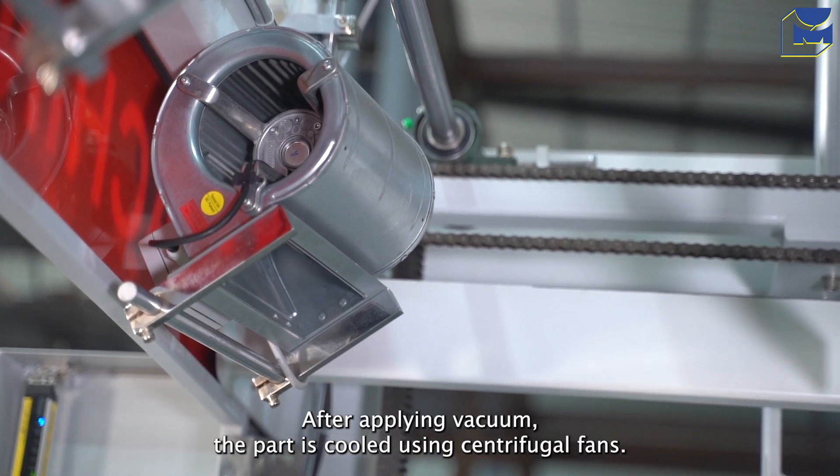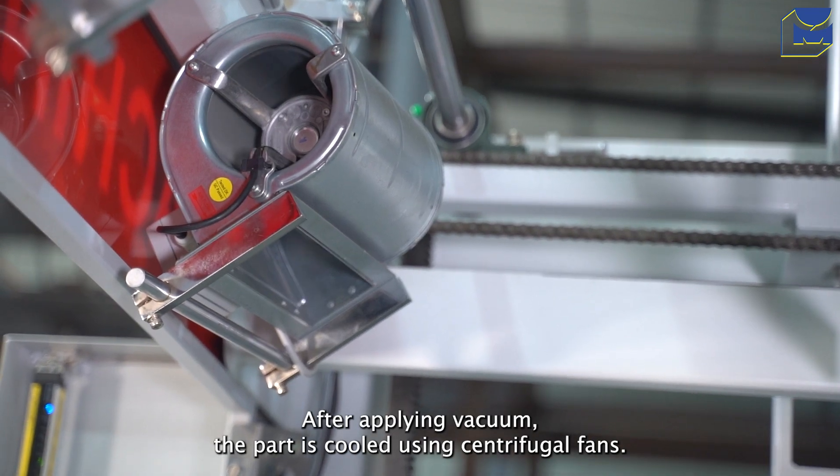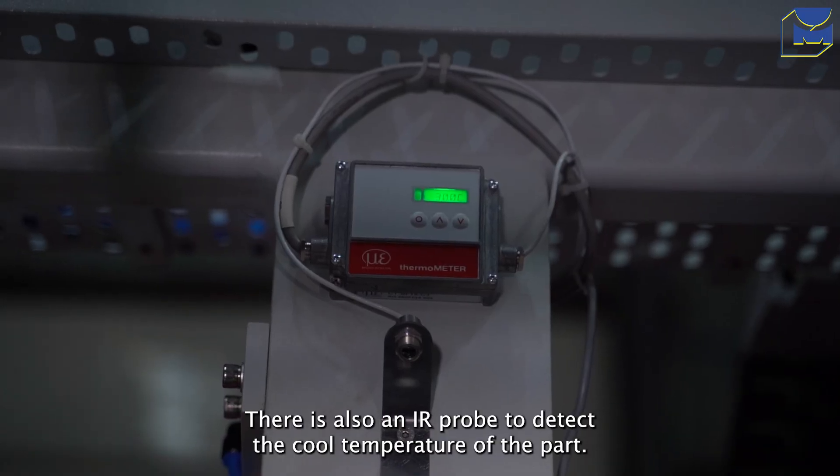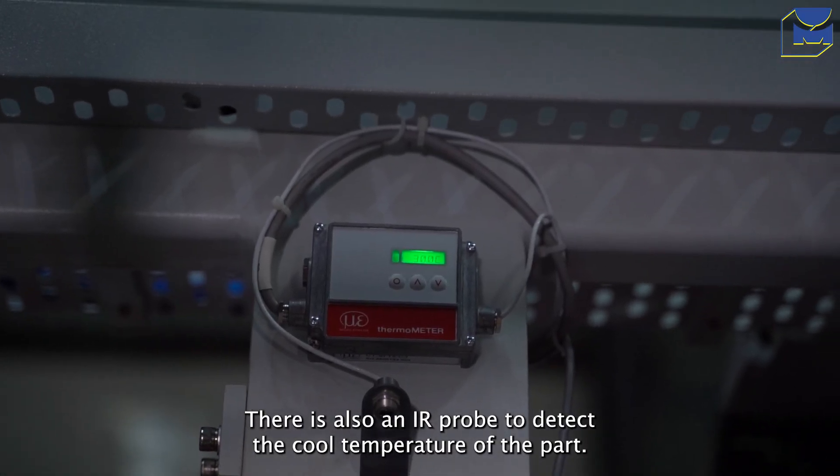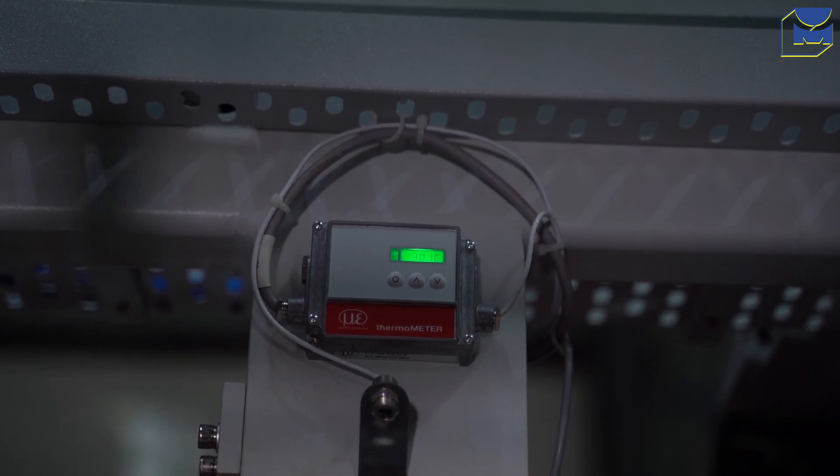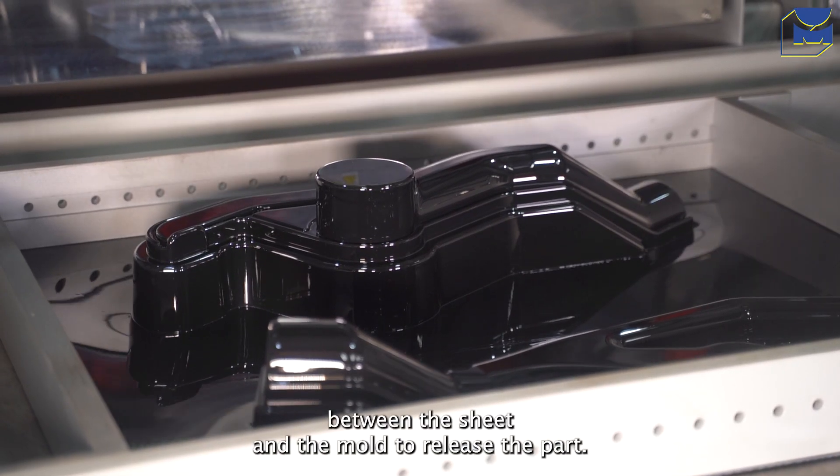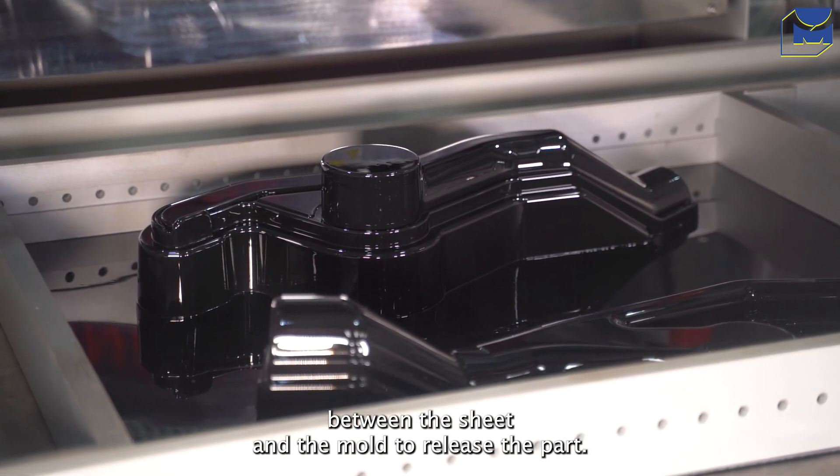After applying vacuum, the part is cooled using centrifugal fans. There is also an IR probe to detect the cool temperature of the part. After cooling, release air is applied between the sheet and the mold to release the part.